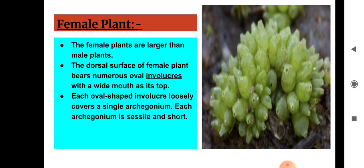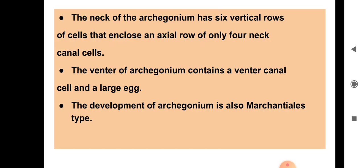On the female plant, each oval-shaped involucre loosely covers a single archegonium. Each archegonium is sessile and short — sessile means the archegonium does not have any kind of stalk. The neck of the archegonium has six vertical rows of cells that enclose an axial row of only four neck canal cells. The number of neck canal cells varies in different organisms, but in this case only four are present.